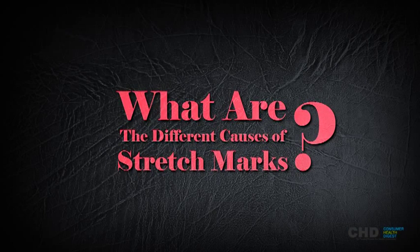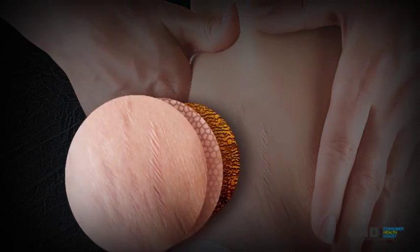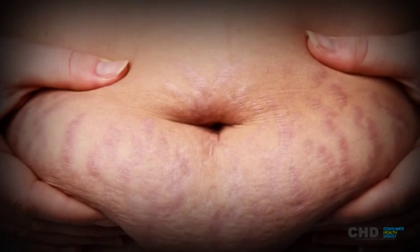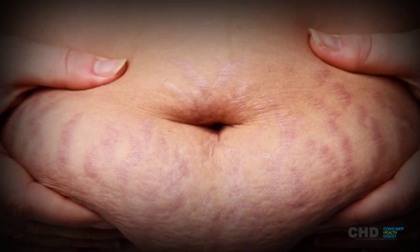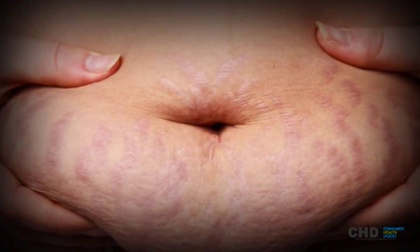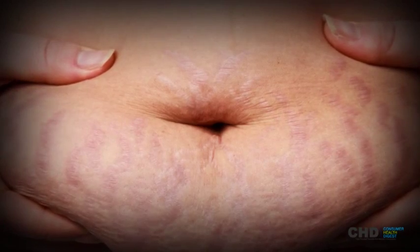What are the different causes of stretch marks? Stretch marks are striations on the outermost layer of the skin due to ruptured and damaged collagen and elastin fibers underneath. The primary reason for torn collagen fibers is excessive stretching of the skin beyond its normal capacity.